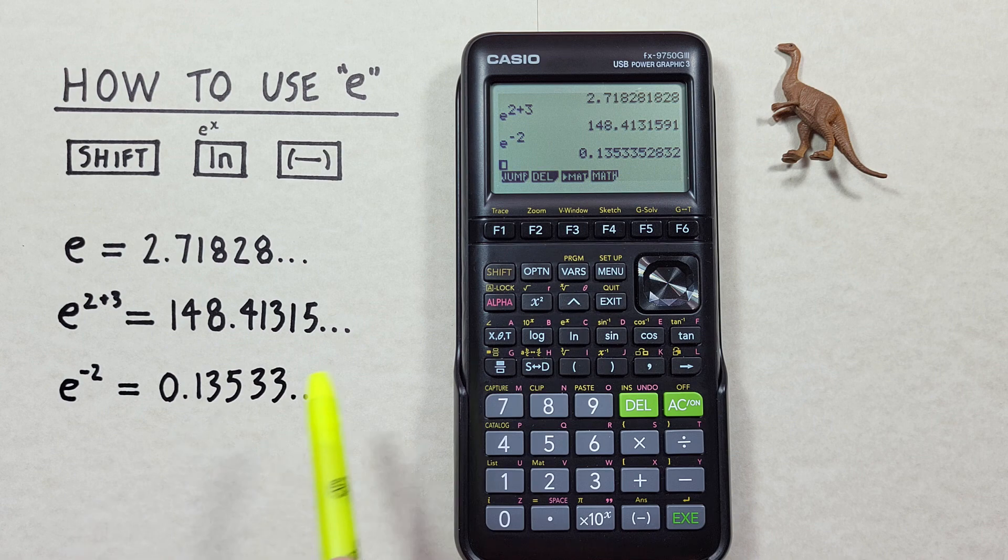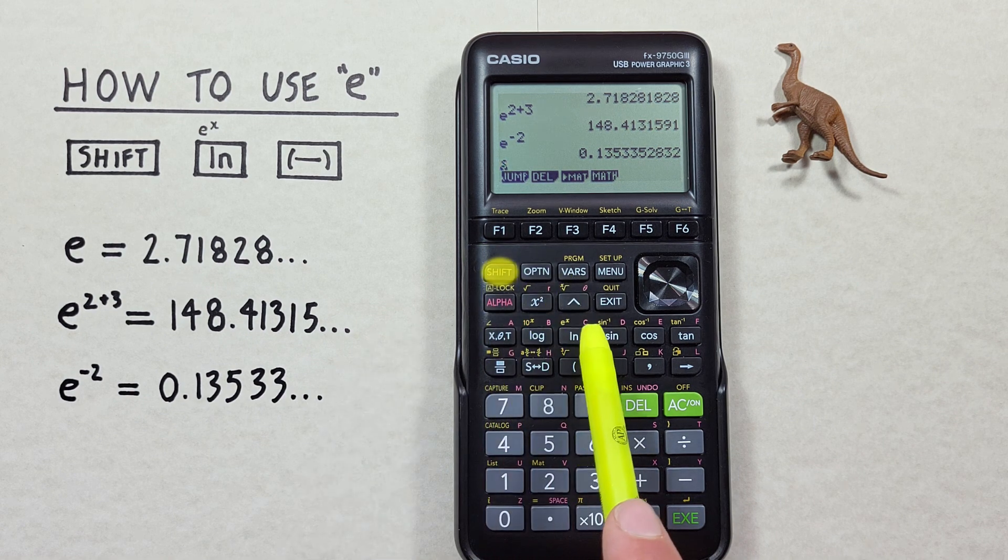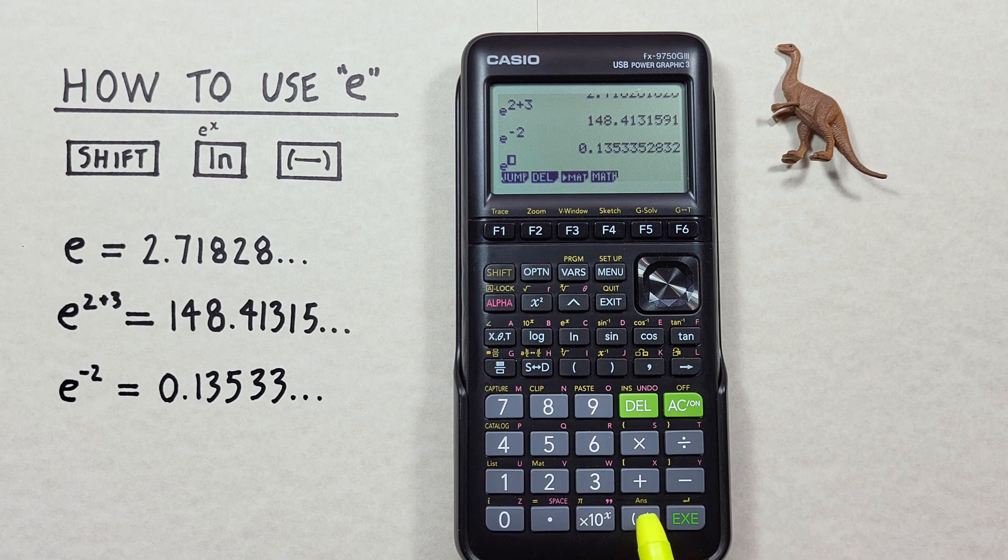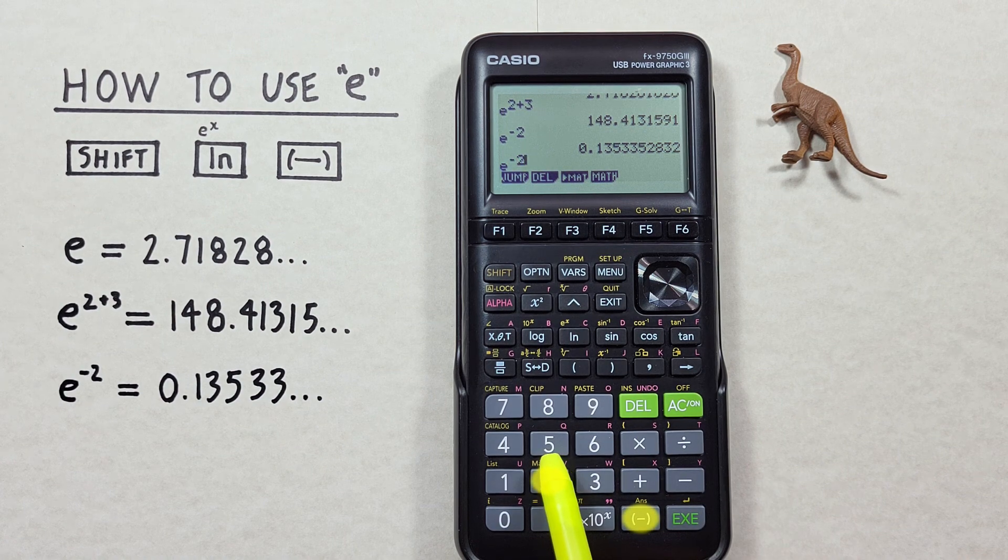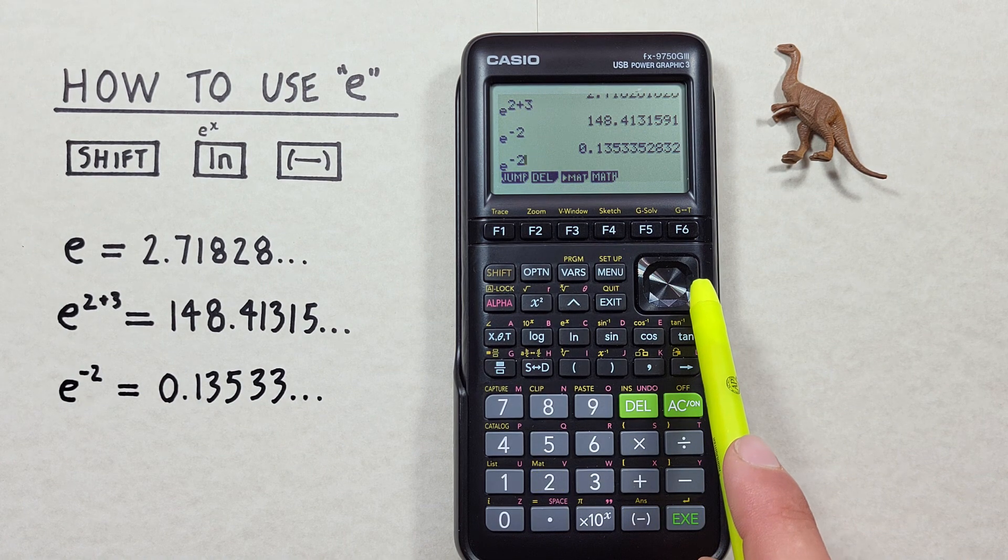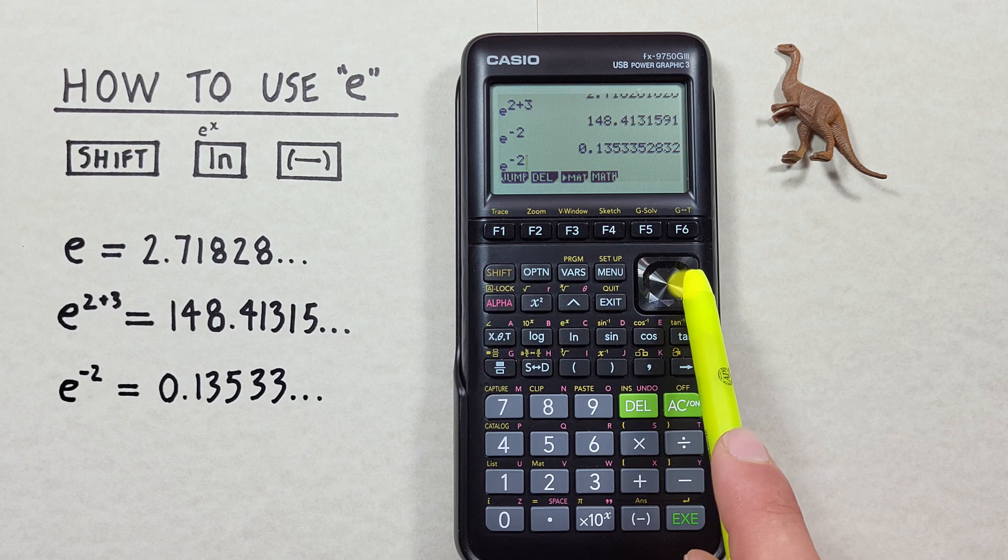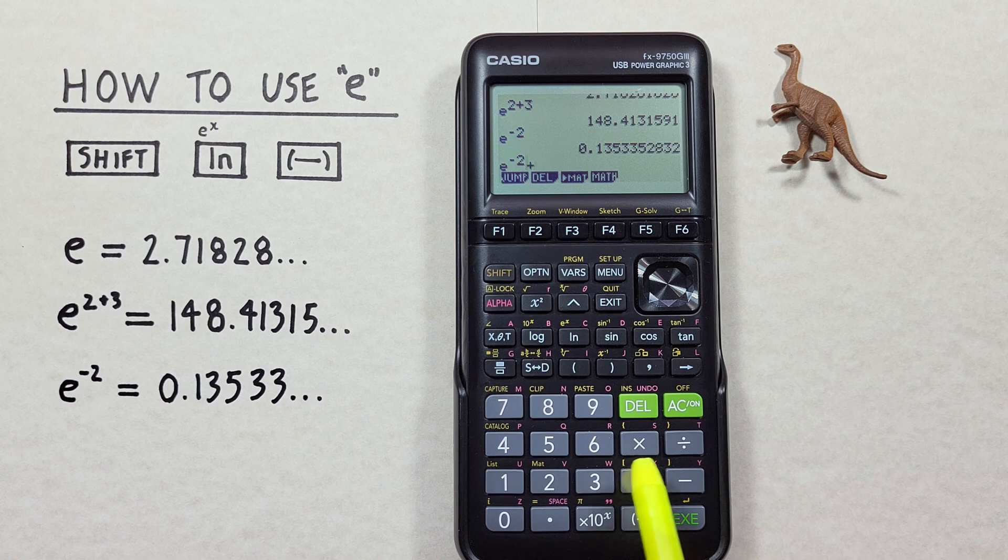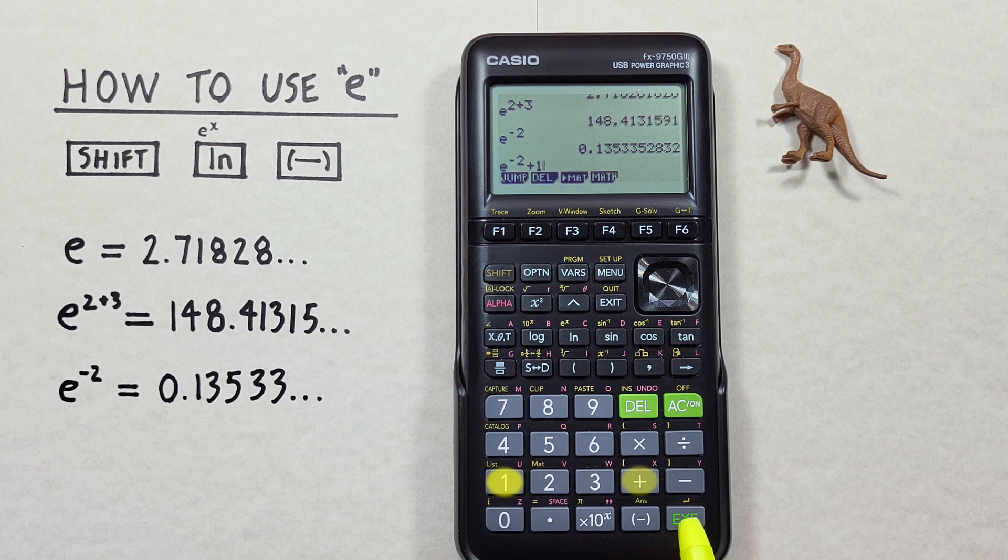So to do that, we would do shift ln, there's our E, then enter our negative 2, and now bring our cursor down with the right key so that it's outside of the exponent, and then enter our plus 1 and hit EXECUTE.